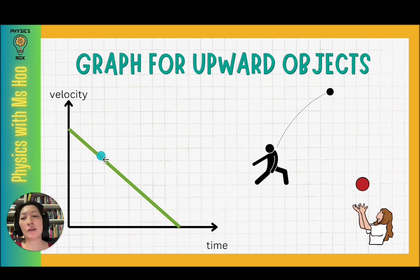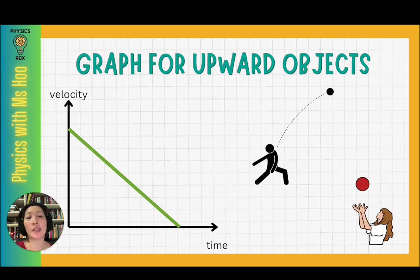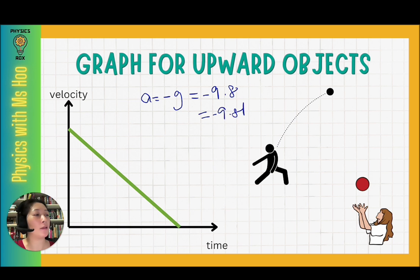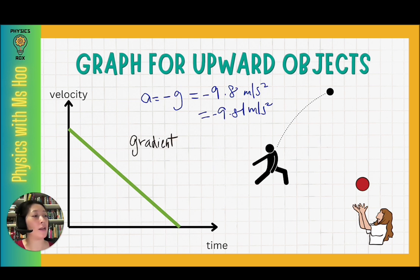If looking only at the motion from where the object is thrown to its maximum height, you get a graph where velocity starts at some value and decreases until it reaches zero. The object is moving against gravity, so it is decelerating — which is negative acceleration. The value of acceleration is negative G: negative 9.8 m/s² for IGCSE, or negative 9.81 m/s² for SPM or A-levels. The gradient of this graph equals negative G.